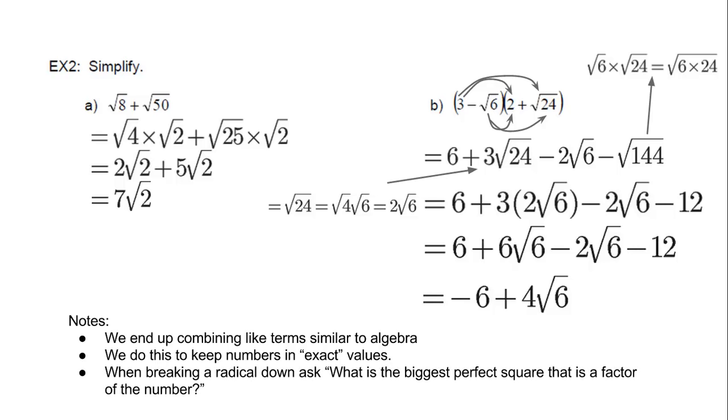And when breaking a radical down, the key question to ask is, what is the biggest perfect square that is a factor of that number? So we've seen some, like 25, although 4, you saw 4√6. What's the biggest perfect square that's a factor of that number? And that's basically it. And so you've got some practice questions to try.